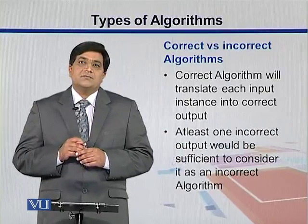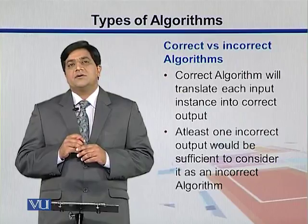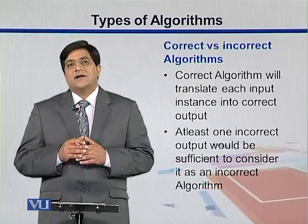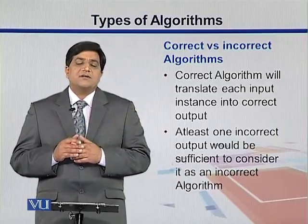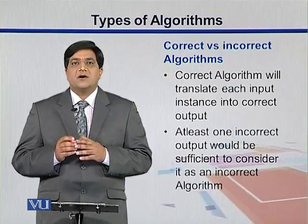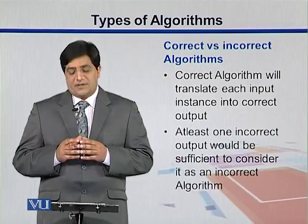We can also define a correct and an incorrect algorithm based upon what it's doing. If it's giving you the required task, that is correct. And since an algorithm has a large number of steps, if there is some issue or problem with any of the steps, we can say that algorithm is incorrect.